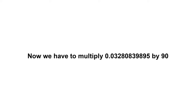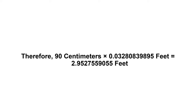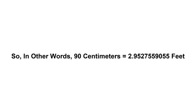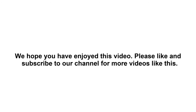Now we have to multiply 0.03280839895 by 90. Therefore, 90 centimetres times 0.03280839895 feet equals 9,527,559,055 feet. So, in other words, 90 centimetres equals 9,527,559,055 feet. We hope you have enjoyed this video.